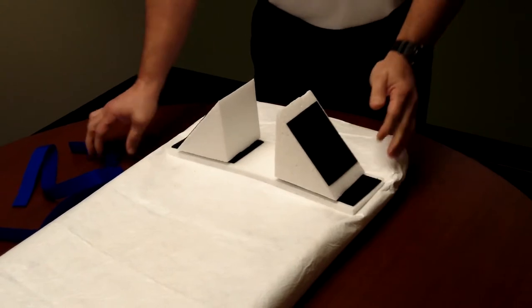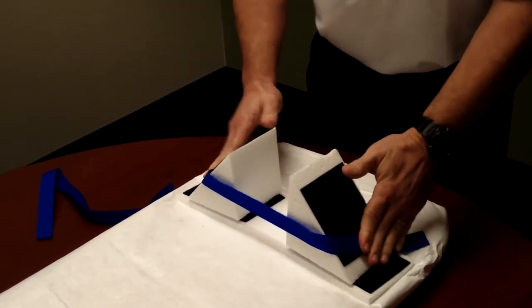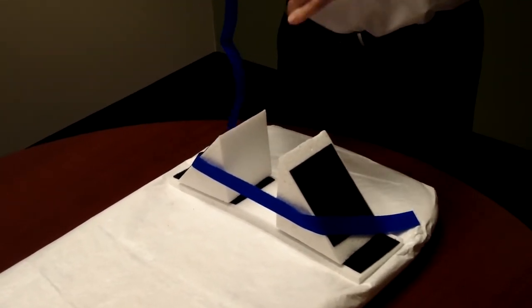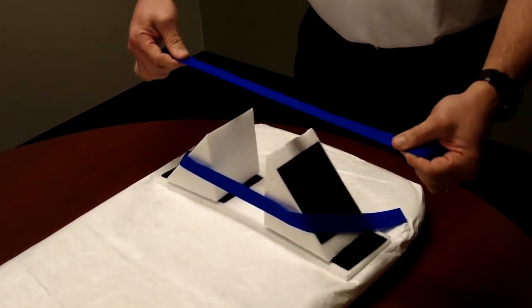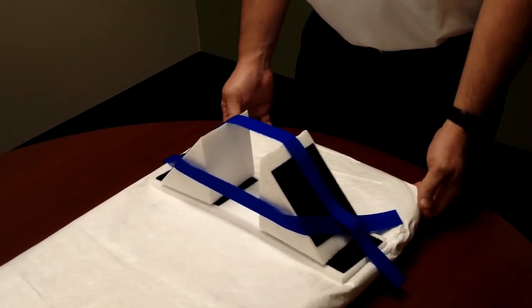You firmly push down on the head blocks. One strap goes under the patient's chin and velcros to the head blocks, and the other strap goes across the patient's forehead, securing the patient's head securely to this backboard.